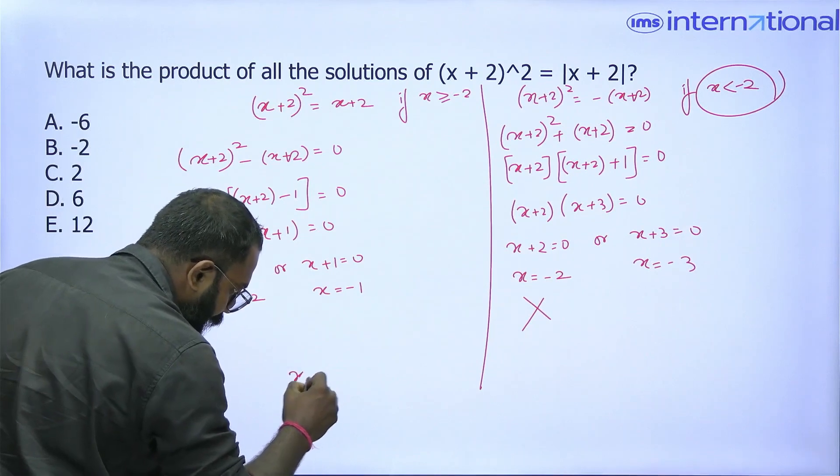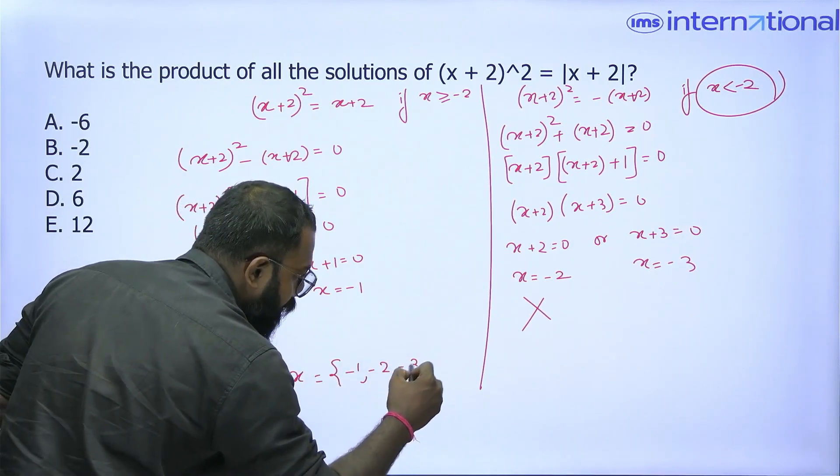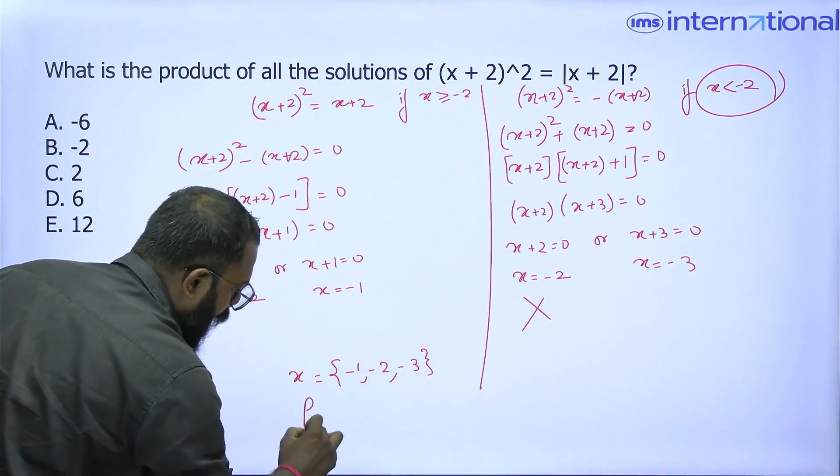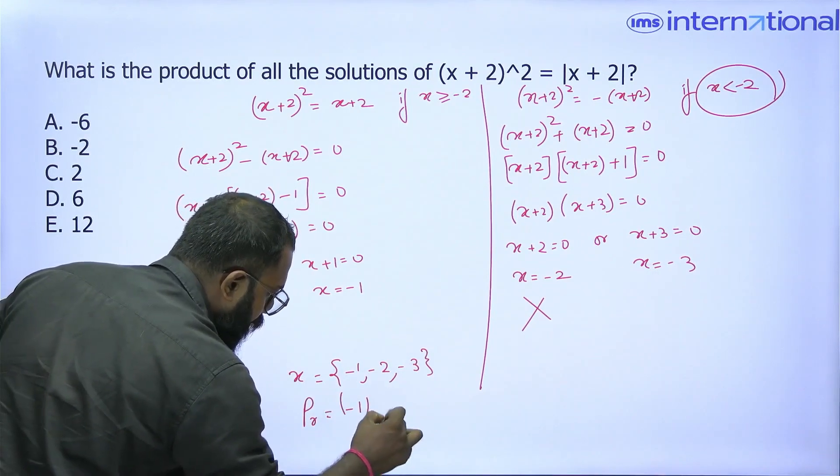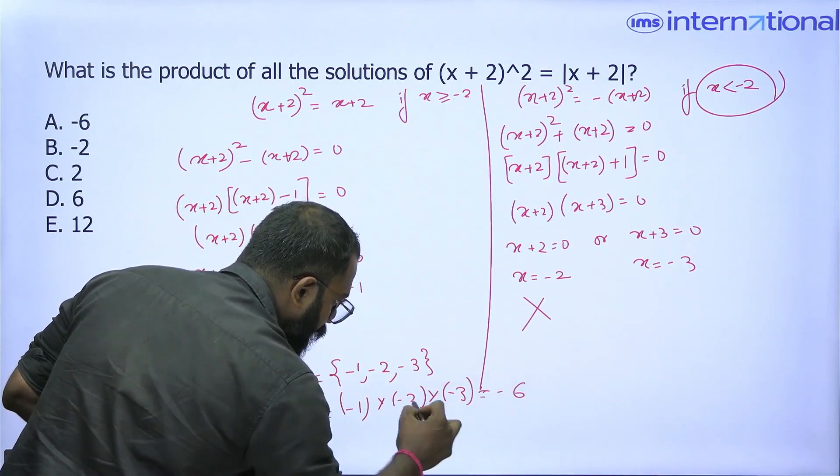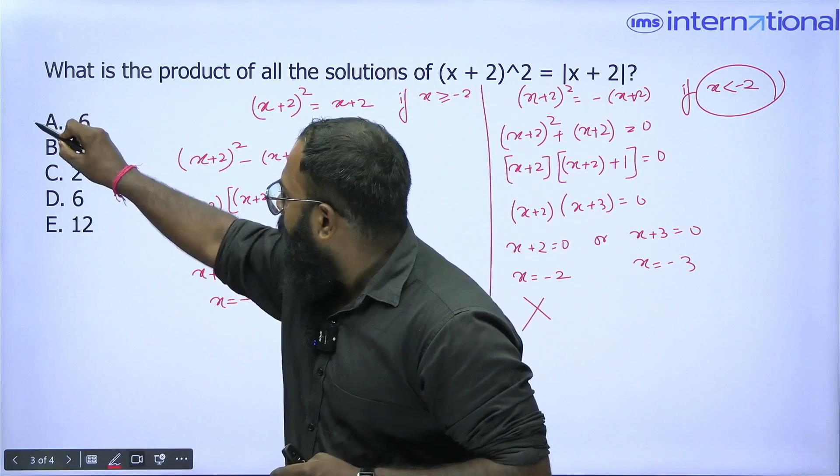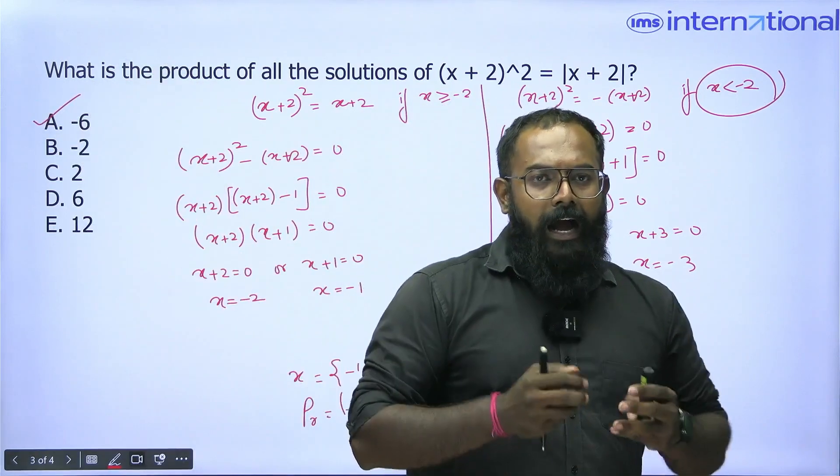So all the values that I got for x are -1, -2, and -3. The product of all these values is -6. So option A is the correct answer.